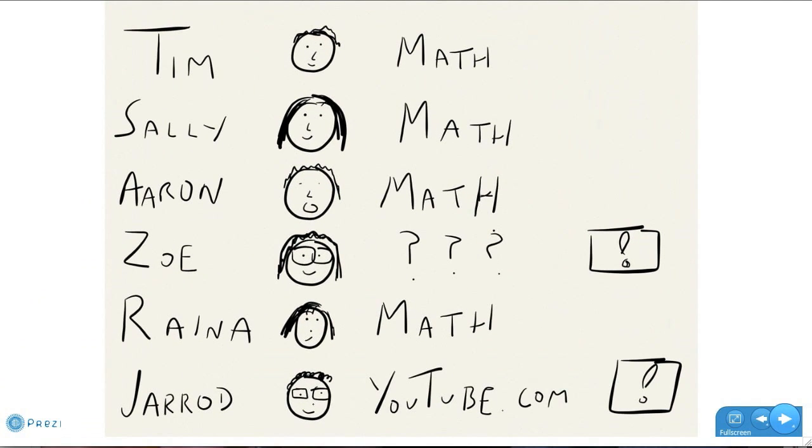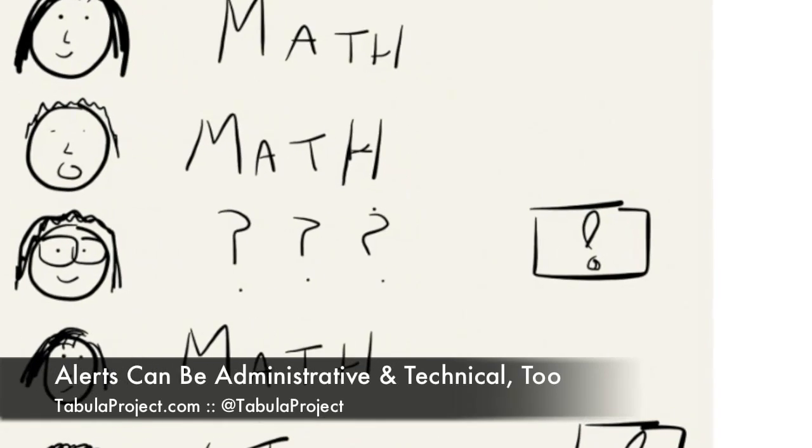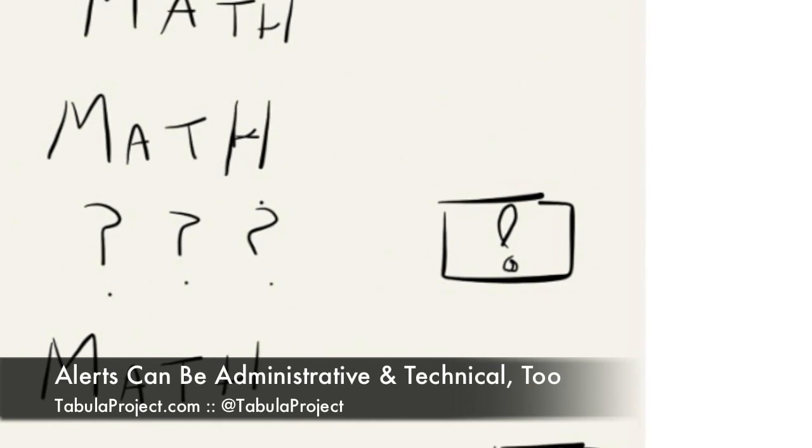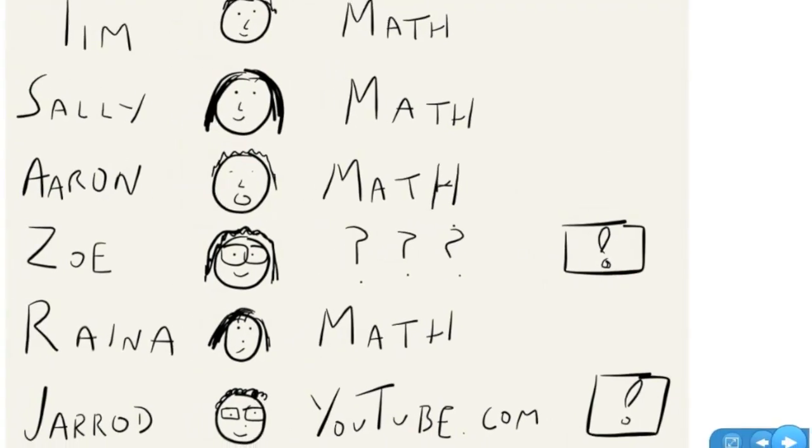Another example. Let's go back to the teacher dashboard here. And everybody, all the students are working in a math app. And we can see that there's an alert next to Zoe's name, there are question marks. So that's an alert that something's gone awry. Maybe Zoe left the tabula system and is doing something that's not what everybody else is doing, or maybe there's a network connectivity error or some other technical error that needs some attention.